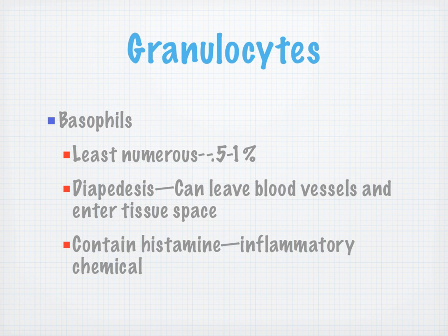Basophils are our other granulocyte — the least numerous, 0.5 to 1%. They can also leave the blood vessel and enter tissue space. They contain histamine, an inflammatory chemical — that thing that causes the allergic-like weal on your arm during allergy testing, where a control histamine pinprick is used as a positive control to confirm you can mount a histamine reaction.